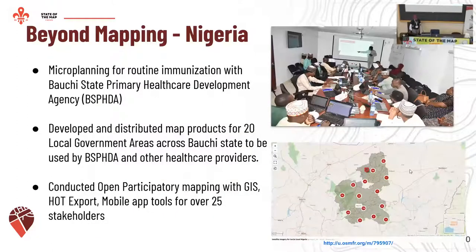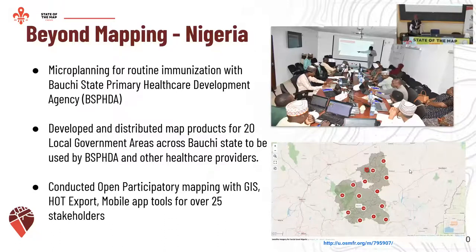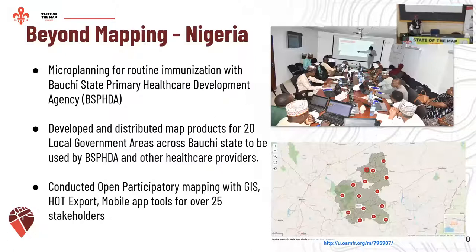And besides mapping — going beyond the map — we were also able to involve stakeholders like the Bauchi State Primary Health Care Development Agency, who is going to use these building footprints to support their micro-planning for routine immunization in the state. We were also able to create information products like an interactive map — you can see the link below — and generate maps that could be used by healthcare providers. On top of that, we had other stakeholders like GIS planners being trained on GIS tools and how to use OpenStreetMap.